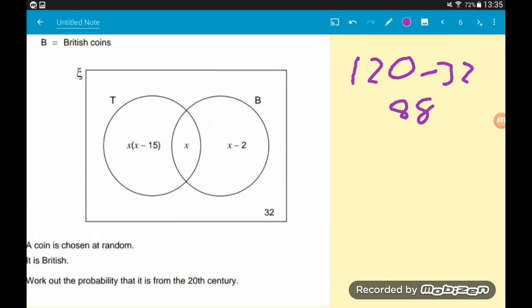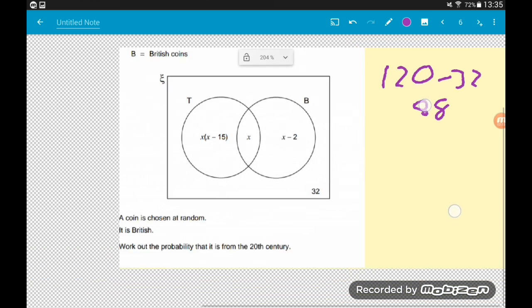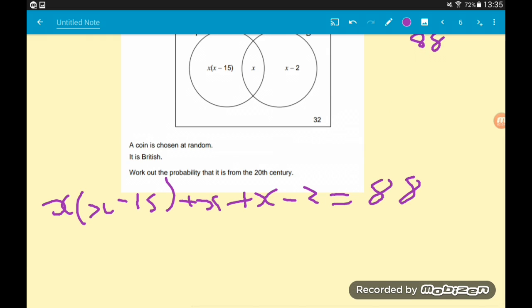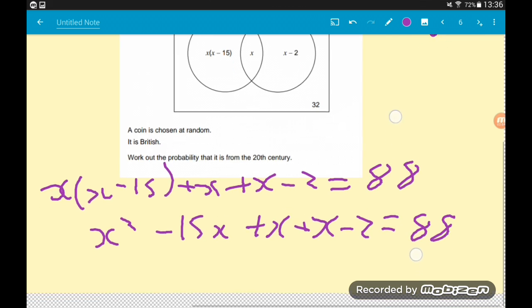So that tells us the total number of coins inside the circles add up to 88. x lots of (x minus 15) add x add (x minus 2) equals 88. Let's expand the bracket, so x squared minus 15x plus x plus x minus 2 equals 88.